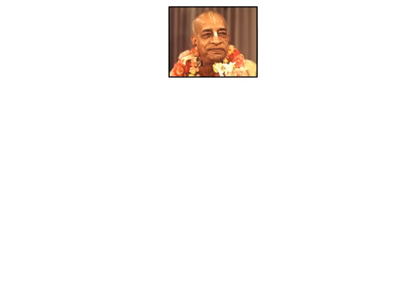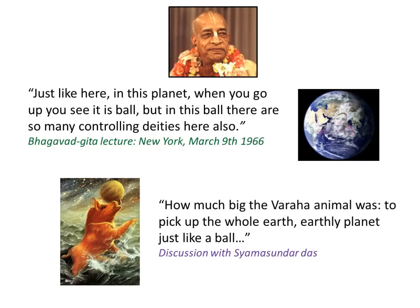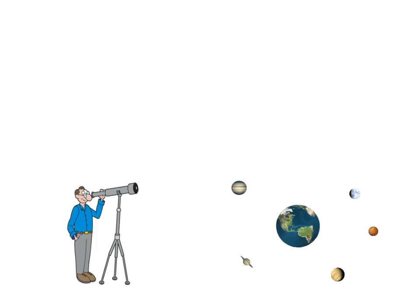More quotes here by Srila Prabhupada. Just like here in this planet, when you go up you see it is a ball. But in this ball there are so many controlling deities here also. How big the Varaha animal was to pick up the whole Earth, Earthly planet, just like a ball. And finally, a quote from the 3rd canto of the Bhagavatam purport. All the planets here are described as Gola, round. Every planet is round, just like islands in the great ocean.